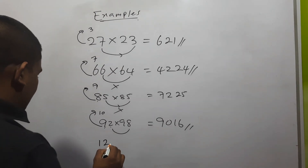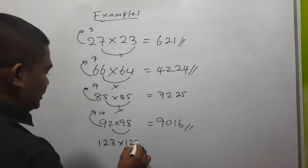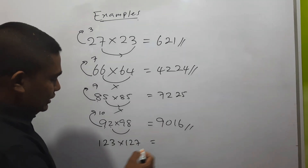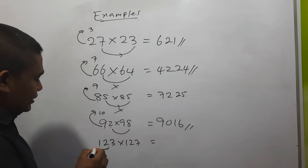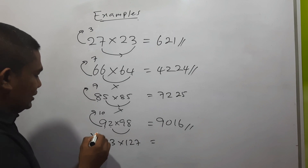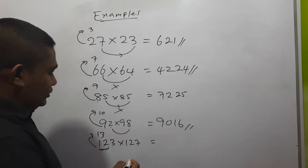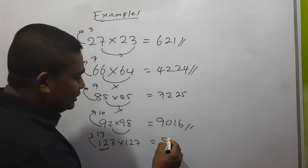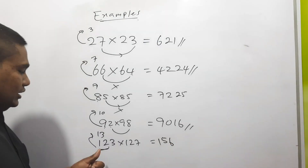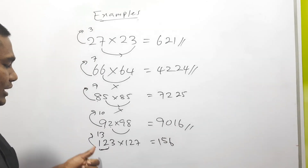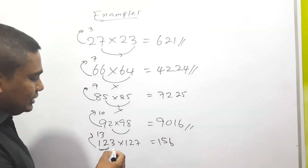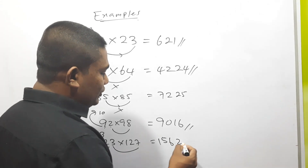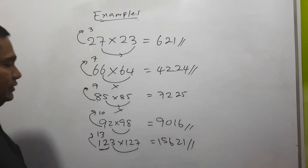Another example: 123 into 127. The 10th place number here is 12. 12 plus 1 is 13. 13 into 12 is 156. Then multiply the unit place numbers: 3 into 7 is 21. The answer is 15621.